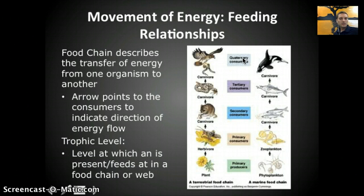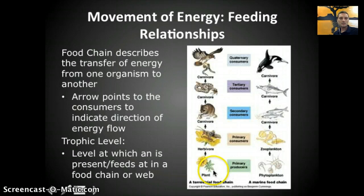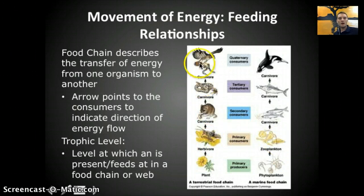The trophic level is slightly different from the consumer level. A trophic level is the level at which an organism is present or feeds at in a food chain or food web. Plants and phytoplankton represent trophic level one — the first level. Herbivores and zooplankton would be trophic level two, then three, four, and five. Producers are not considered a consumer, whereas they are accounted for in the trophic level.